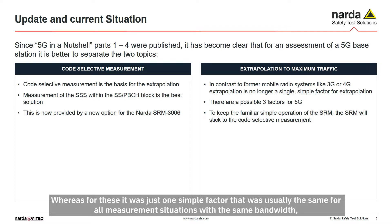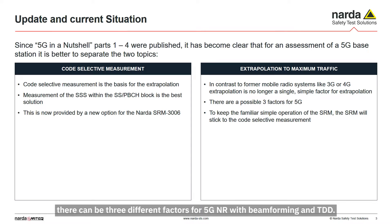It has become apparent that the best solution is to measure the secondary synchronization signal, SSS. A new software option for the NADA SRM-3006 enables measurements of the SSS for frequency range 1, FR1, which goes up to 6 GHz. The second step, extrapolation to the maximum possible exposure, is not quite as easy as it was for 3G or 4G LTE.